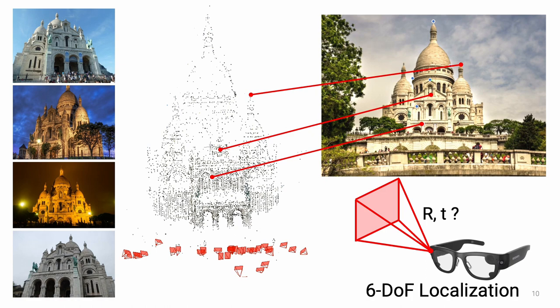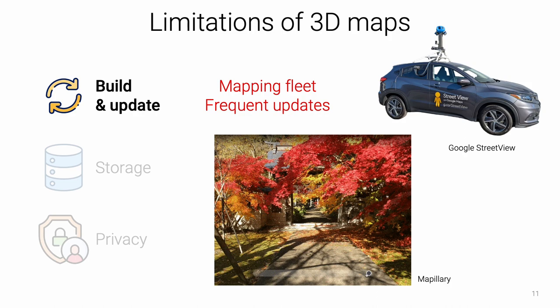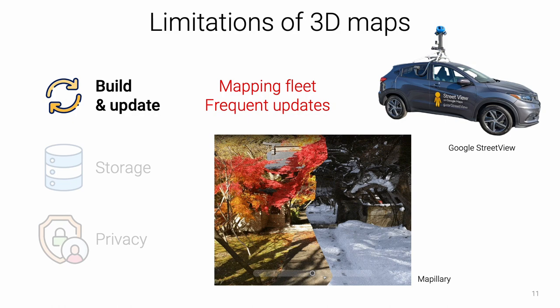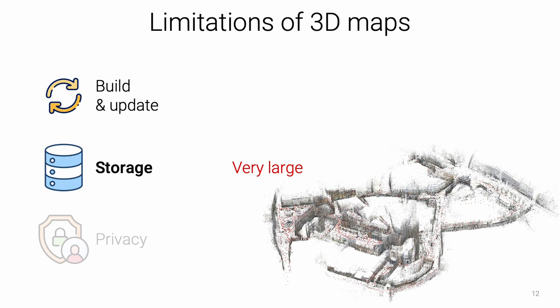First, building and maintaining 3D maps at the world scale requires expensive sensor fleets. Because these maps encode the local appearance, they need to be updated after major changes like seasons, which requires acquiring new mapping images. Second, simply storing 3D maps is very expensive, because they are made of millions of points, each associated with a high-dimensional visual descriptor. This prevents executing localization on device and instead relies on costly cloud-based services.